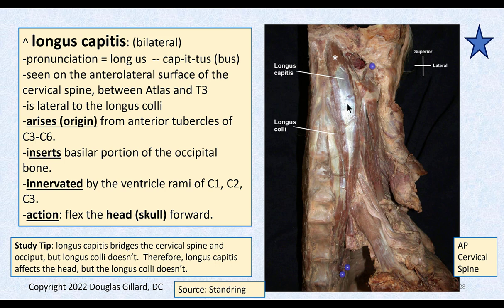The longus capitis is more lateral, but it doesn't extend as far. It also arises from anterior tubercles. The key: it inserts into the basilar portion of the occiput, so it can rock the skull forward — it flexes the skull. Study tip: longus capitis bridges the cervical spine and occiput, longus colli doesn't. Therefore longus capitis affects the head, longus colli does not.